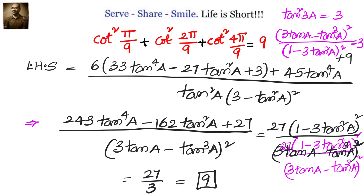That's how I was able to prove that cot square pi by 9 plus cot square 2 pi by 9 plus cot square 4 pi by 9 equals 9. If you have seen this solution before or have any alternative solution, please let me know in the comments. Thanks for your time and support. Bye for now, I will catch you once again with another interesting example. Till then keep smiling and sharing.